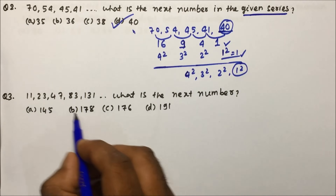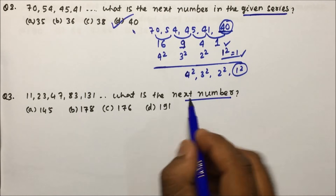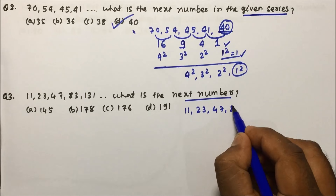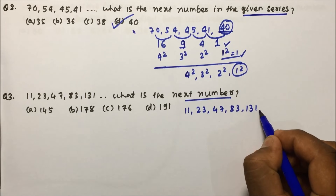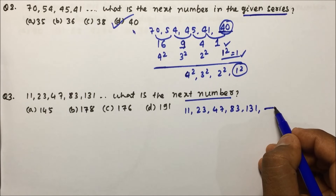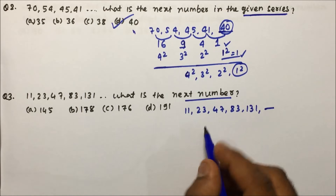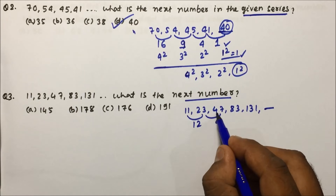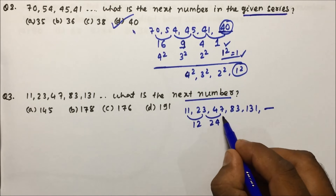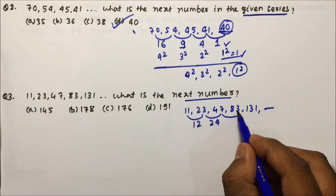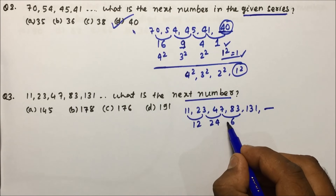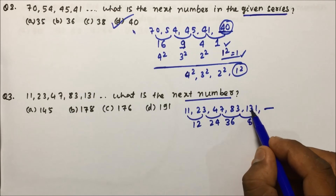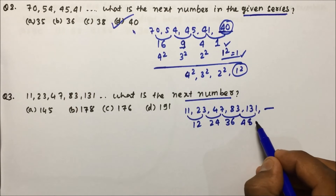Question number three: another series — find the next number. The series is 11, 23, 47, 83, 131. The differences are: 23 minus 11 is 12, 47 minus 23 is 24, 83 minus 47 is 36, 131 minus 83 is 48.